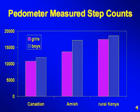This physical activity transition is substantiated by measured pedometer counts. Canadian children and youth living a contemporary lifestyle average between 10,000 and 12,000 steps per day. Amish kids average 13,000 to 16,000 steps, and rural Kenyan kids average around 17,000 to 18,000 steps per day — providing cross-cultural evidence of a physical activity transition.